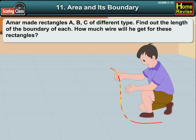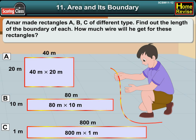Amar made rectangles A, B, C of different sizes. Find out the length of the boundary of each. How much wire will he get for these rectangles?